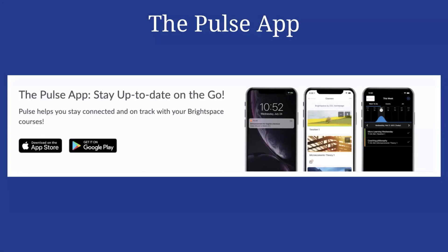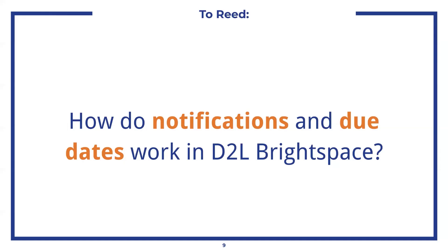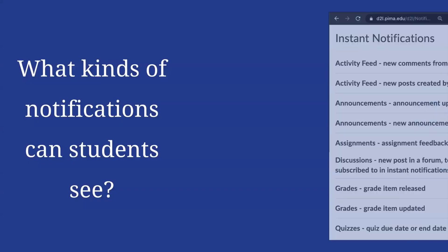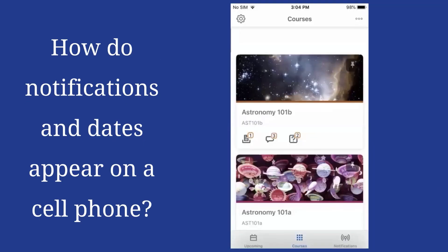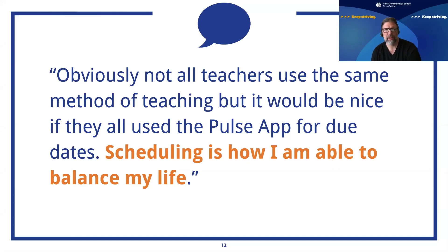Here's an example of what it looks like on the phone. This is the Pulse app. It connects with both cell phones and tablets, and it's downloadable from the App Store and on Google Play. Students can see notifications on a variety of things, which might include announcements you post or grade items you share — there's a whole variety of options they can select. Students are saying that it would be nice if all teachers used the Pulse app.